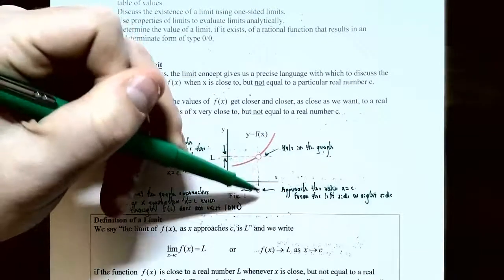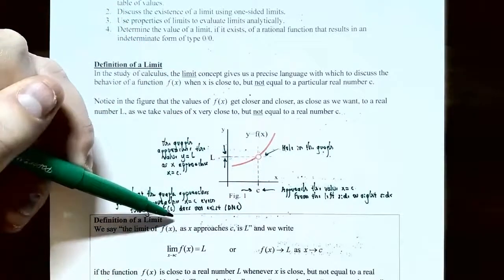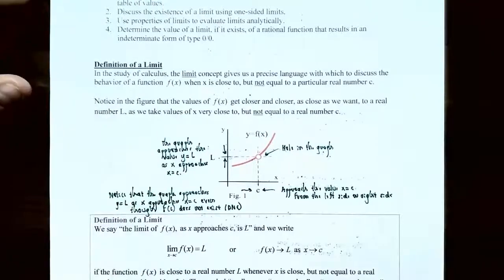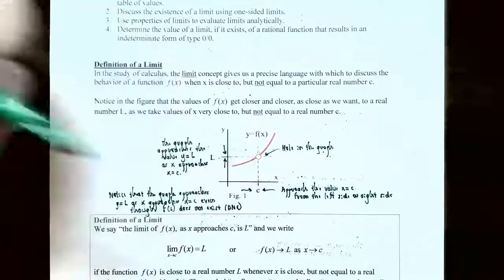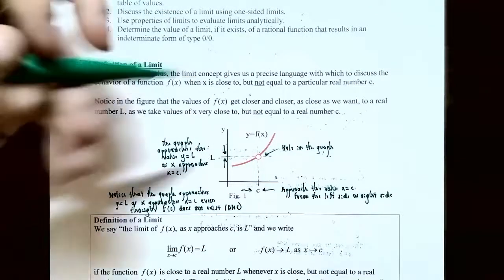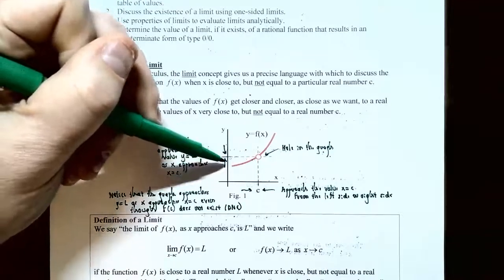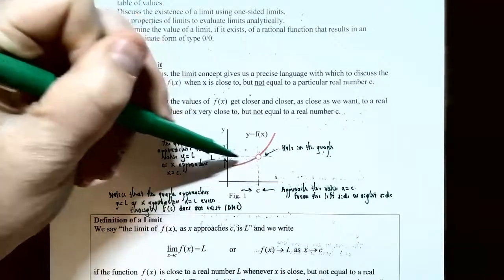The graph approaches the value y equals l as x approaches x equals c, even though if you plug in c into the function, f of c does not exist — it's undefined. So you may have a hole in the graph, but we're not interested in whether there's a hole or not. We're interested in what's happening to the y values, which are getting closer and closer to y equals l.